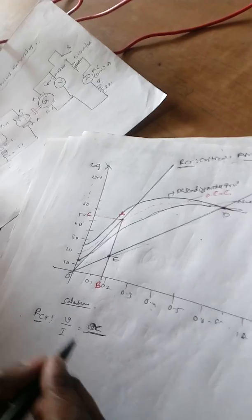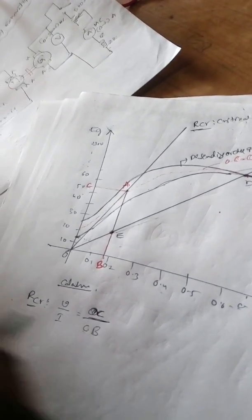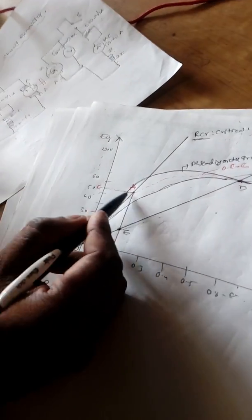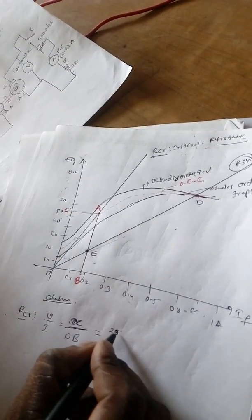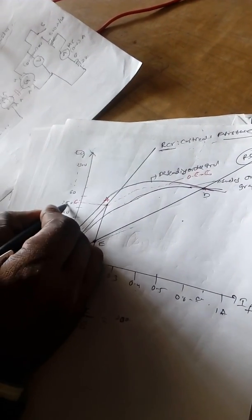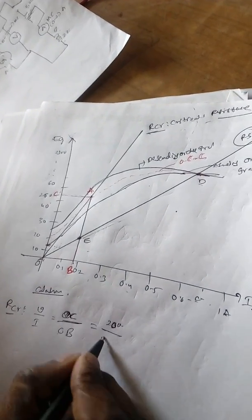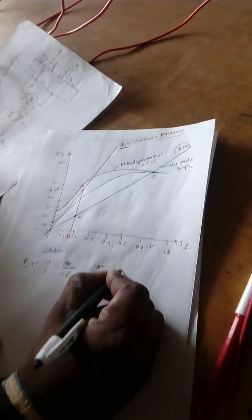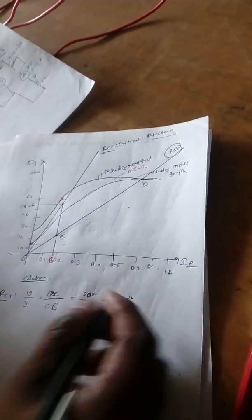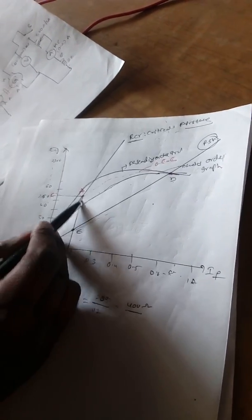The current here is OB. OC by OB gives the slope of the critical field resistance line. For example, if it is 200 V here at some ampere point, then something like 400 V will come. This line's slope is nothing but the critical field resistance.